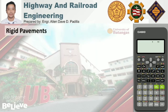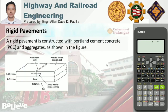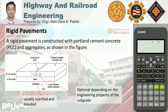Next we have rigid pavements. Rigid pavement is constructed with Portland cement concrete (PCC) and aggregates. This figure shows a cross-section of a rigid pavement with three layers. The bottommost layer is still the subgrade or soil, which is usually scarified and blended before being compacted. Next is the base course, usually 4 to 8 inches thick, but this is optional depending on the engineering property of the subgrade — if the subgrade has good engineering properties, the base course may be omitted.